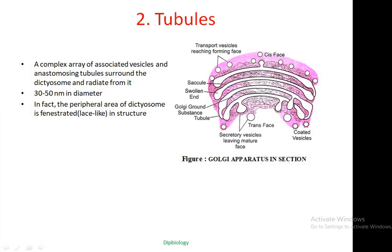The tubules are 30 to 50 nanometers in diameter. The peripheral area of the dictyosome is penetrated by lace-like structures. The tubules are scattered in the peripheral regions, giving the Golgi complex a lace-like fenestrated appearance.